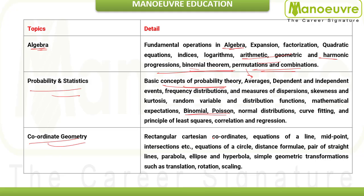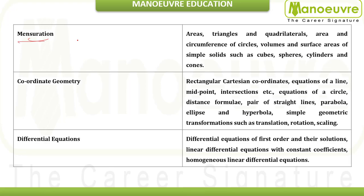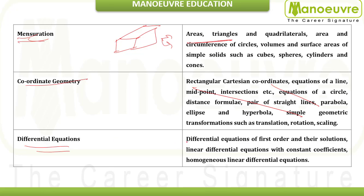Coordinate geometry involves understanding properties of various figures — circle, ellipse, and their equations. Mensuration is an extension of coordinate geometry, covering formulas for volume, surface area, and properties of each structure. Differential equations, which is calculus, has a small syllabus: first-order and second-order equations, homogeneous equations, finding roots and formulas. Trigonometry covers simple identities, trigonometric equations, triangles, height and distance, and inverse formulas.